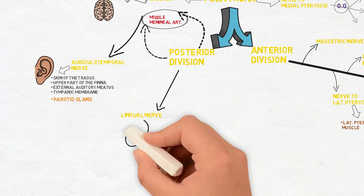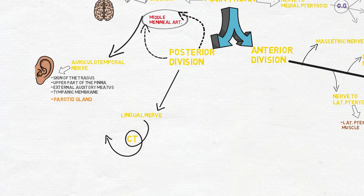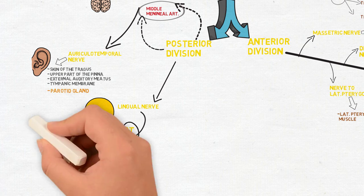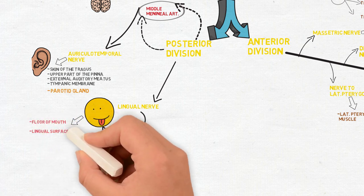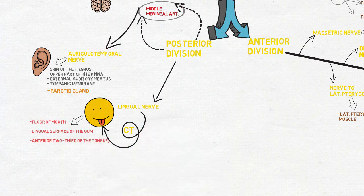The next is the lingual nerve which joins with the chorda tympani nerve to supply mainly the oral cavity. That is, it supplies the floor of mouth, lingual surface of gum, anterior two-thirds of tongue, and then two glands: submandibular and sublingual salivary glands.